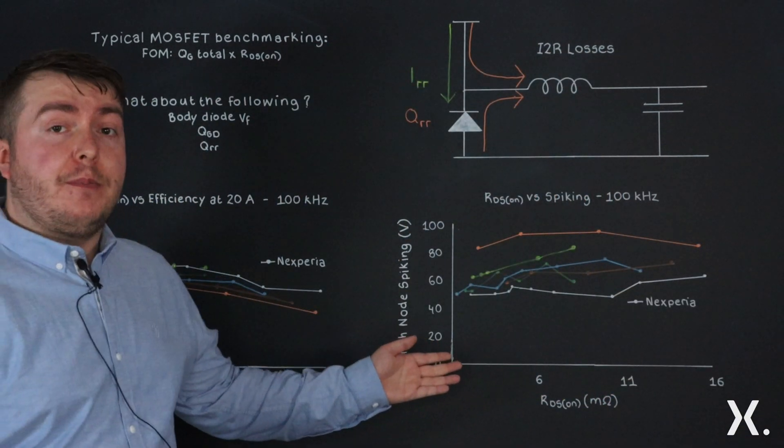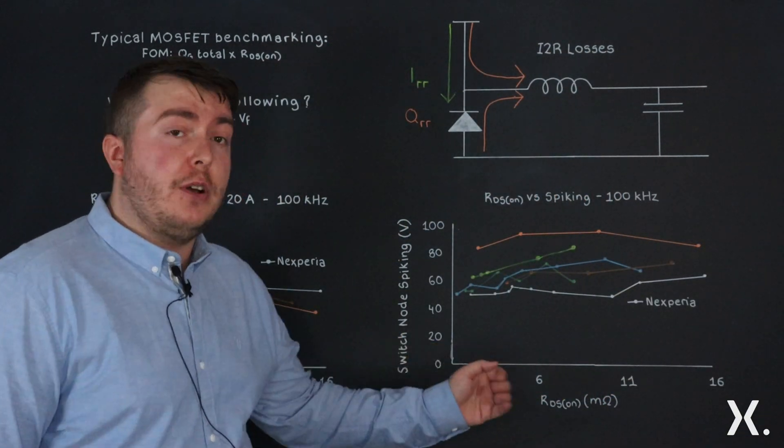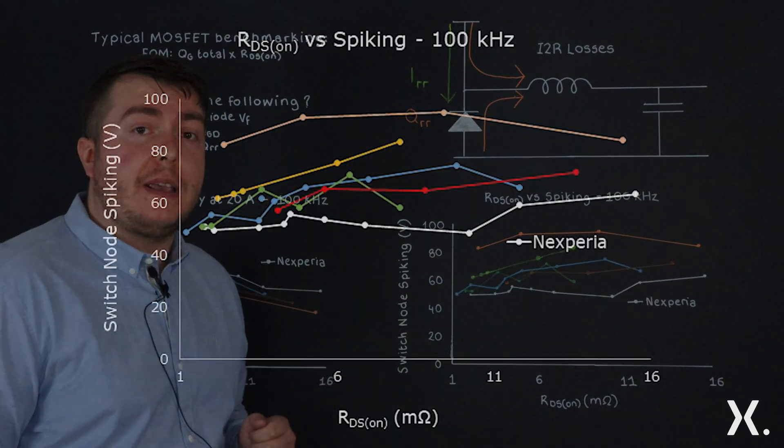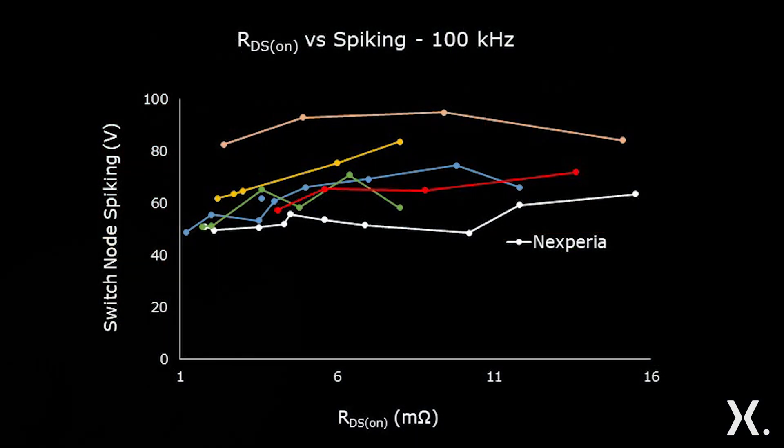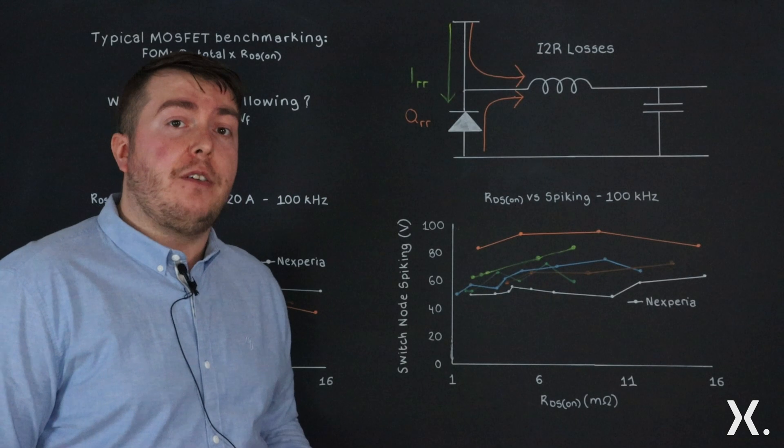On the other side of the graph, we have RDS_on but this time against switch node spiking when we have a V_in of 48 volts. What we can take away is that we have very low spiking across a wide range of RDS_on values.